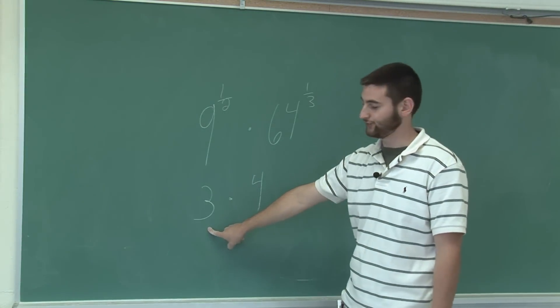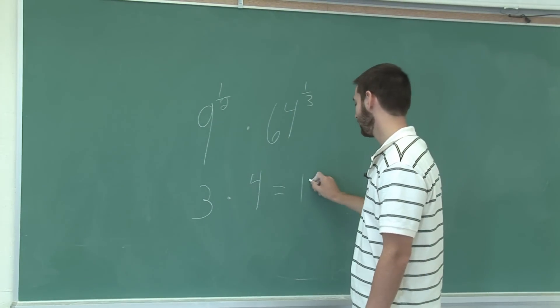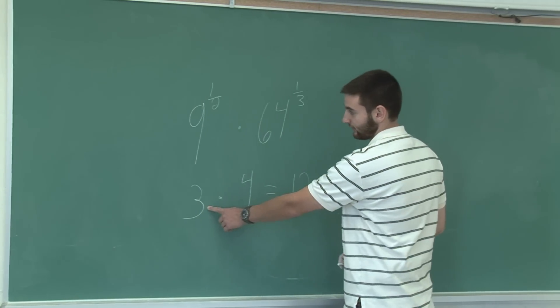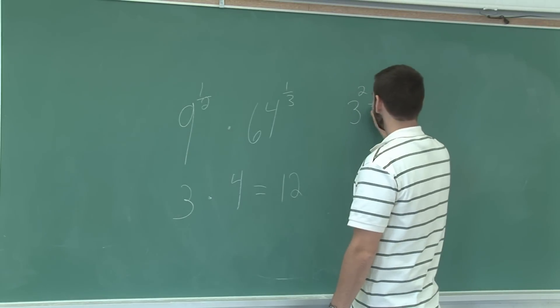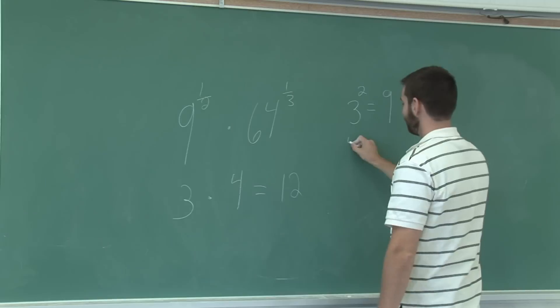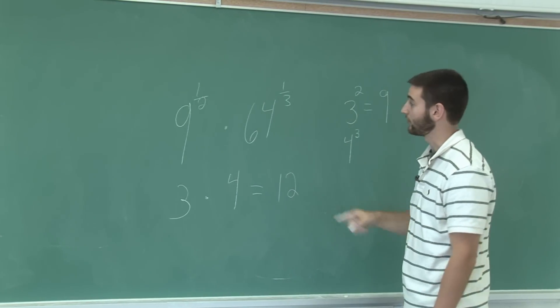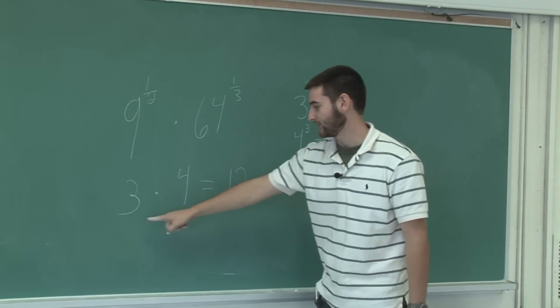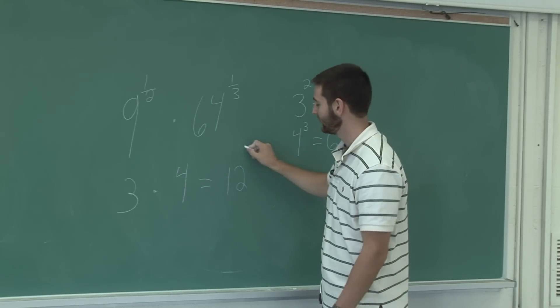So the problem is now reduced to 3 times 4 equals 12. This can be shown to be true because to reverse the operation we square it. So 3 squared equals 9 which checks out, 4 cubed is 4 times 4 times 4 is 64. So this shows that our method is correct and the answer to this problem with fractional exponents is 12.